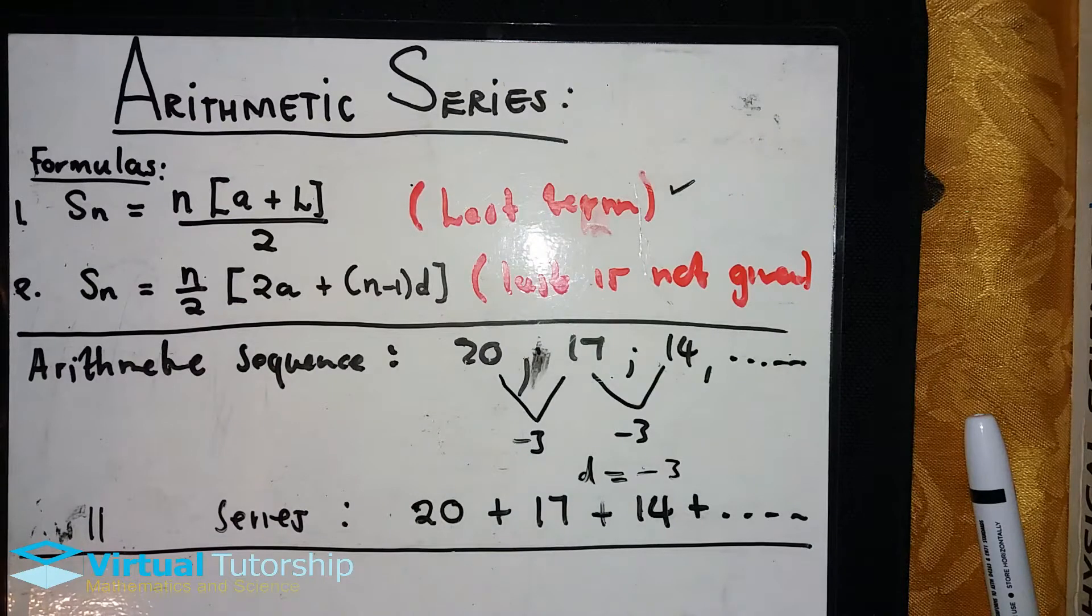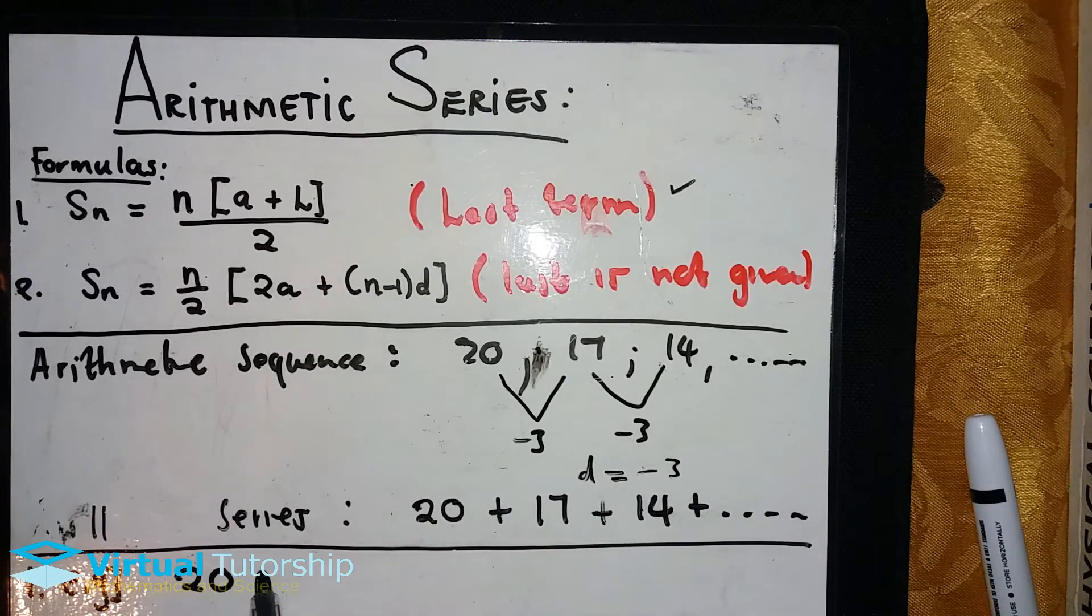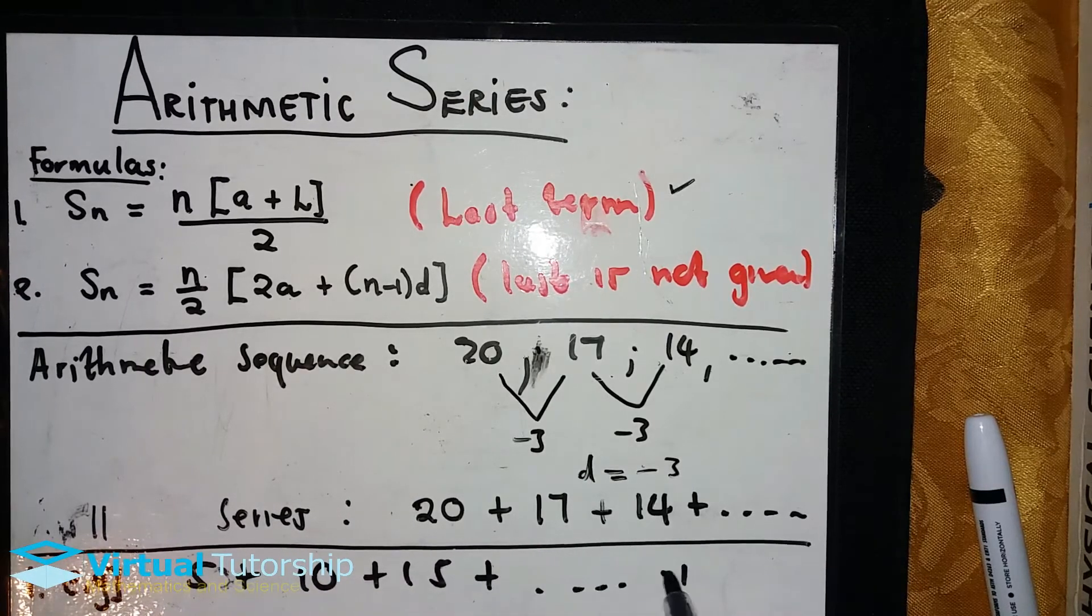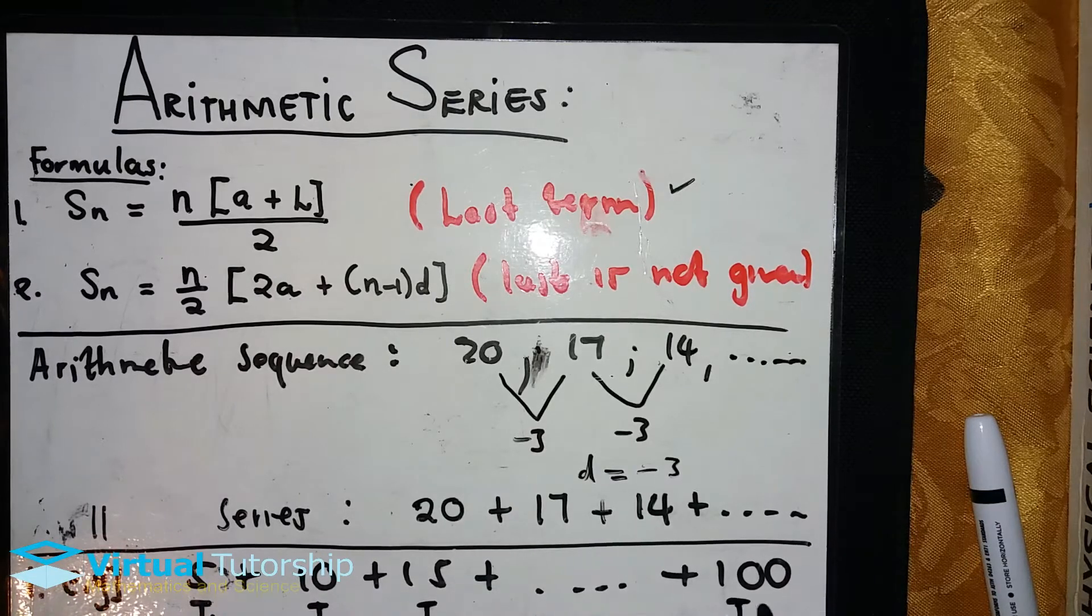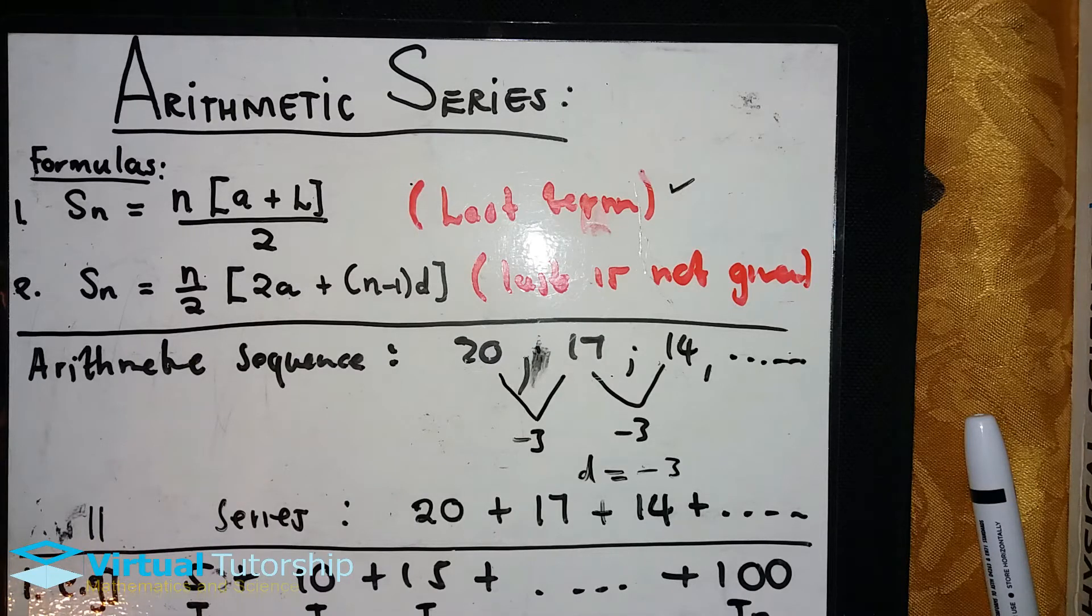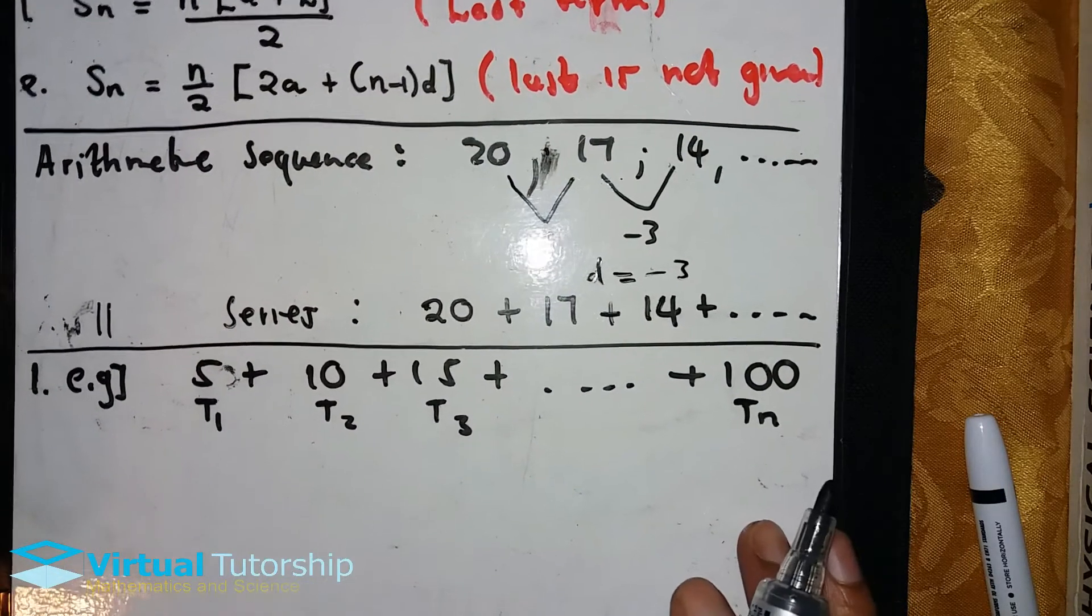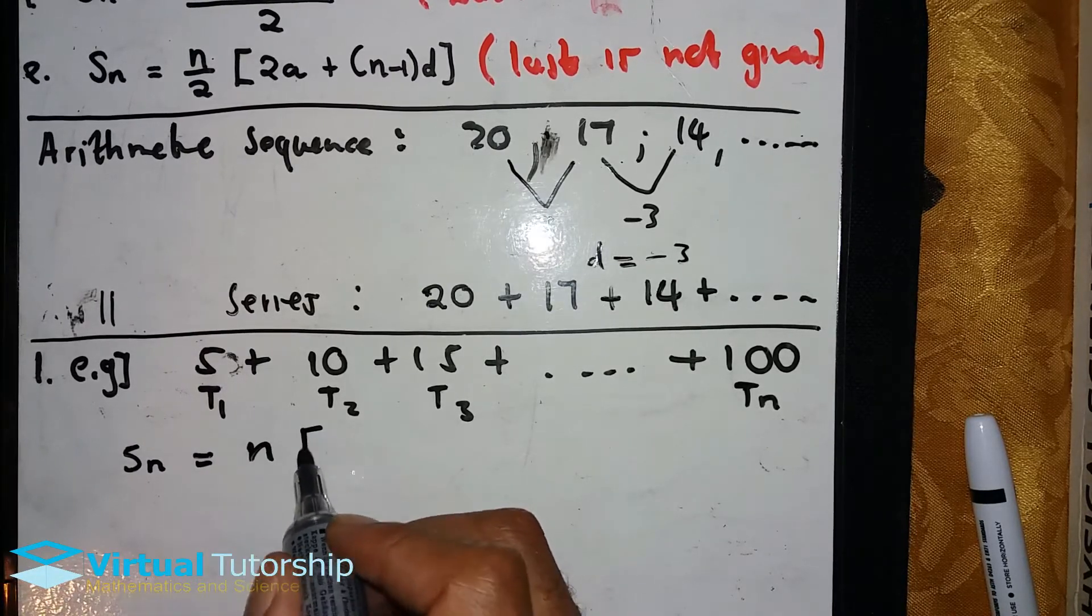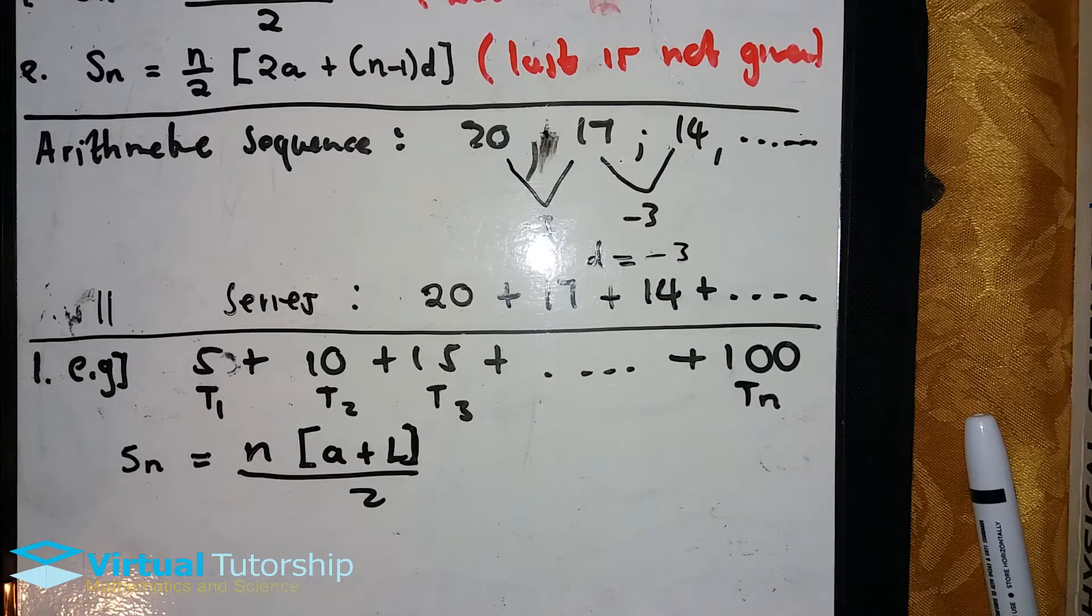Let's start with the first example where we'll apply the first formula where the last term is given. The example is 5 plus 10 plus 15 plus all the way up to 100. This 100 is the last term. This is T₁, T₂, T₃, and Tₙ is the last term.